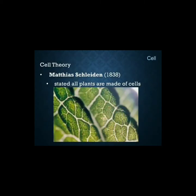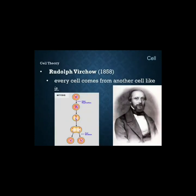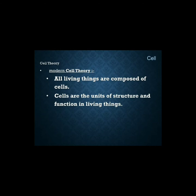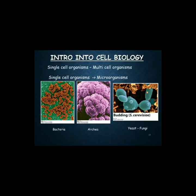Regarding cell theory: Matthias Schleiden in 1838 stated all plants are made of cells. Theodor Schwann in 1839 studied the human notochord, the spinal cord, and concluded all animals are made of cells. Rudolf Virchow in 1858 stated every cell comes from another cell — it means every cell has its origin from a previous cell. Modern cell theory states all living things are composed of cells, cells are the unit of structure and function, except viruses which have only RNA and no cells, and new cells are produced from pre-existing cells.